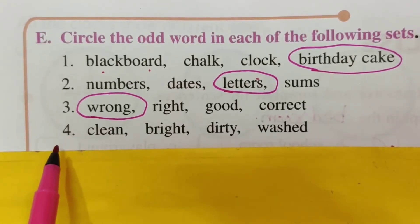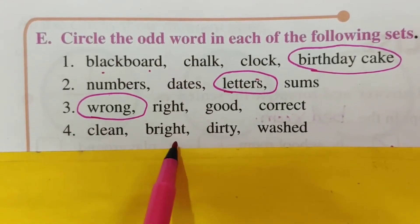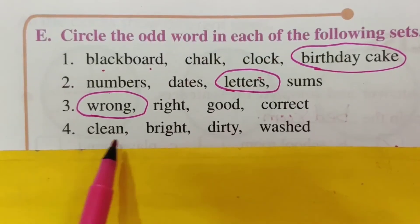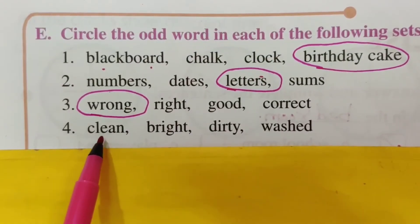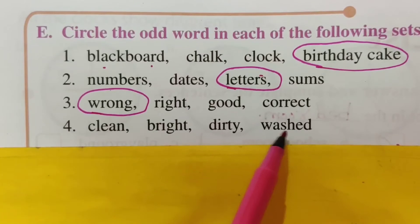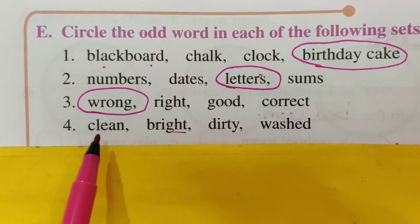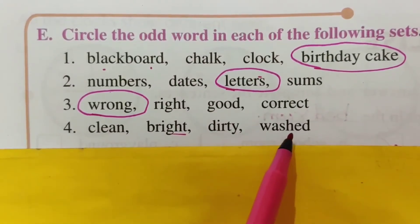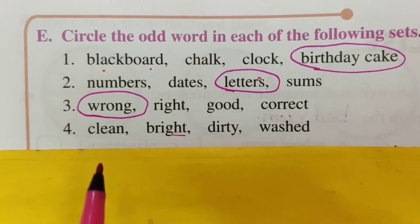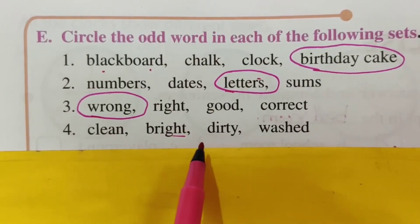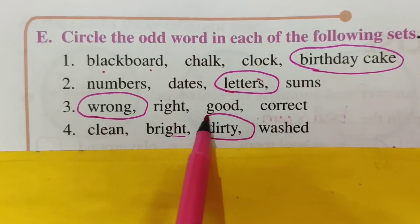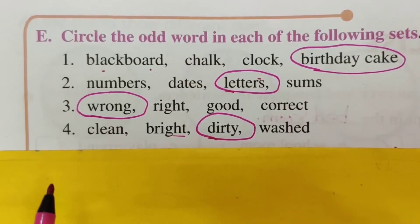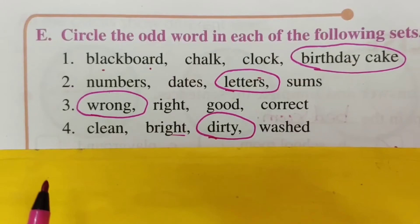Now see the fourth set: clean, bright, dirty, washed. Clean, bright, and washed are related — something that is neat, looks good, or has been washed is clean and bright. So which one is different? Dirty. So circle 'dirty.' These are the odd words we have in this bit.